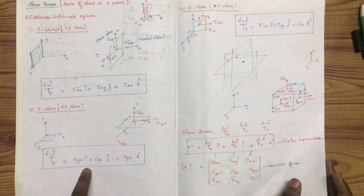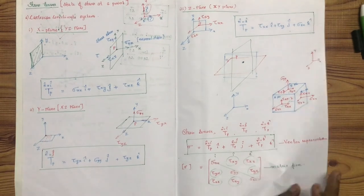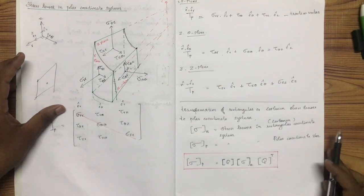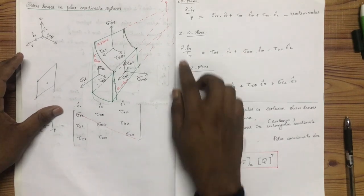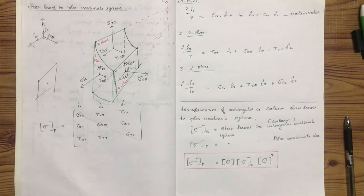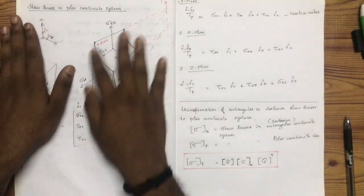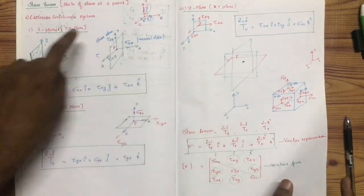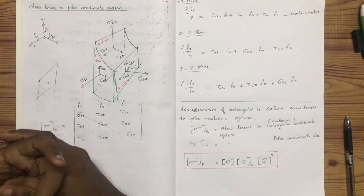We have three stresses on the x-plane and four stresses on the z-plane. We need to work on the n-cap. In this case, we have a unit normal vector from an arbitrary plane. We can represent the n-cap for an arbitrary plane. For polar coordinates it is an arc, n-cap. We also have an XY plane. In this case, we have an arbitrary plane and we need to get the n-cap.